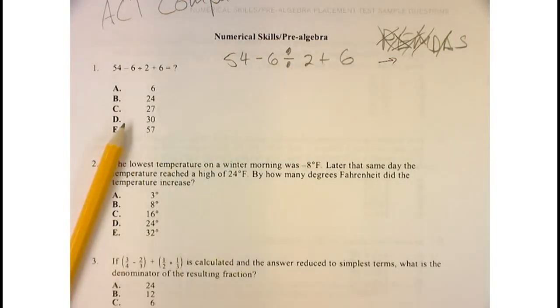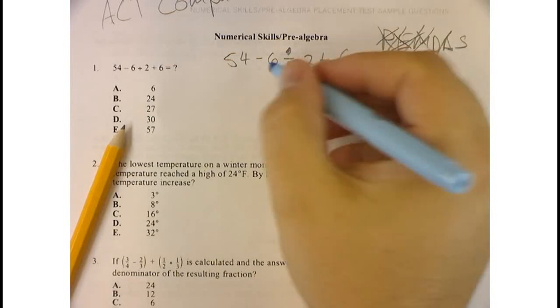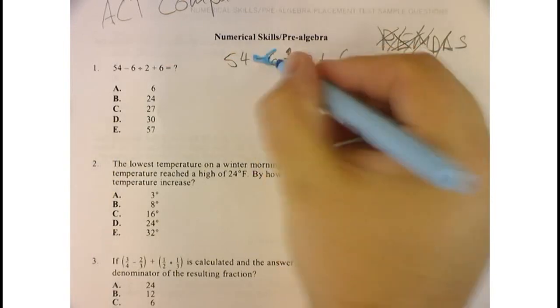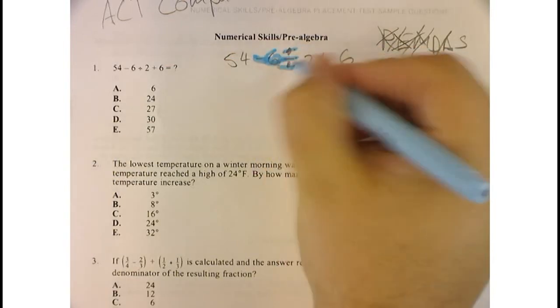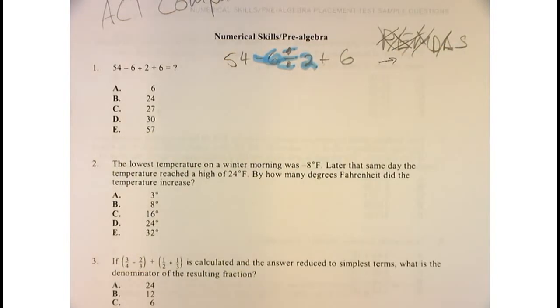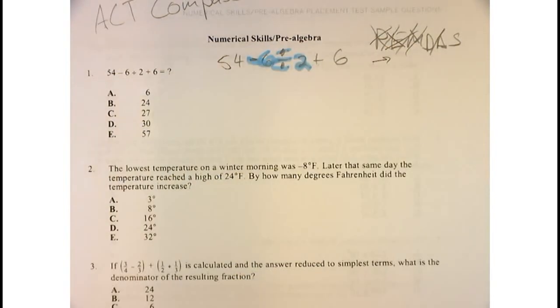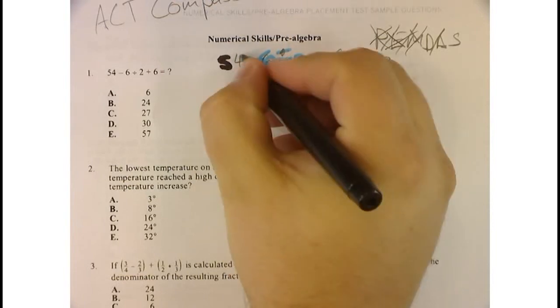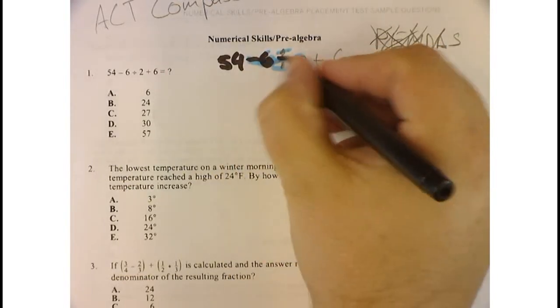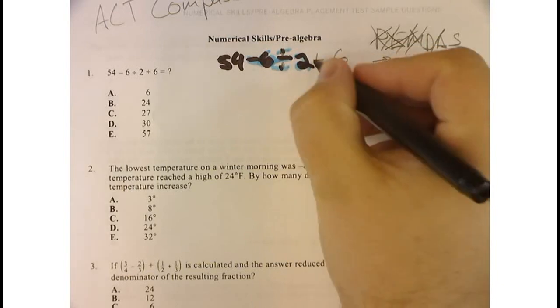So what I'm going to do is I'm only going to do the division part, okay? So now I'm going to treat this like negative 6 divided by 2. So this is really negative 6 divided by 2. Let me get one of my markers so you can see that a little better. So we're saying 54 minus 6 divided by 2 plus 6.